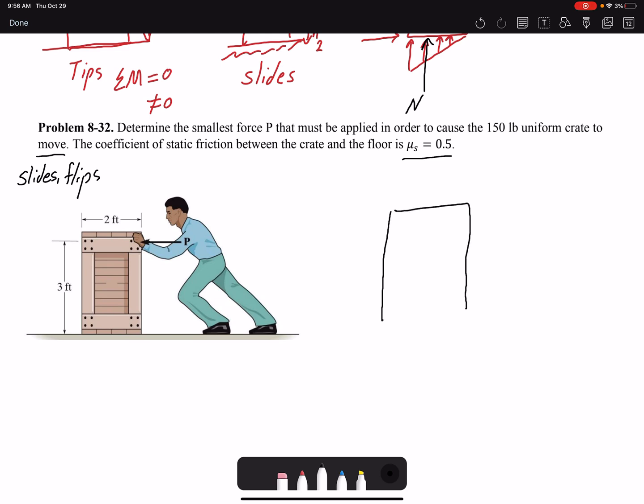The coefficient of static friction between the crate and the floor is μ_s = 0.5. So let's draw the free body diagram. Here I have the weight, I have the normal force, and I'm going to say this distance is x. I have the force being applied.